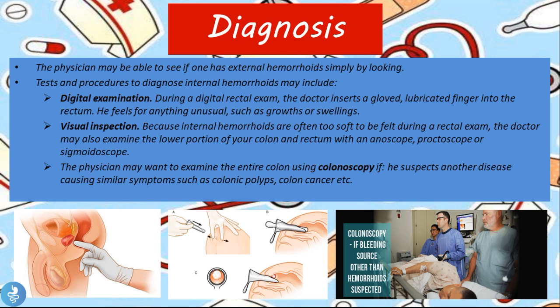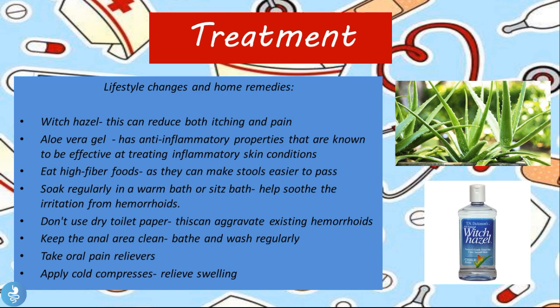The physician may also want to examine the entire colon during a colonoscopy. This is usually done if another disease causing similar symptoms — such as colonic polyps or colon cancer — is suspected. The colonoscopy is reserved for high-risk patients, typically those over 50 or with a history of Crohn's disease, ulcerative colitis, or colon cancer. It is done to rule out other causes of hematochesia, as these diseases have a more aggressive nature and require immediate treatment, unlike hemorrhoids which are not usually a medical emergency.